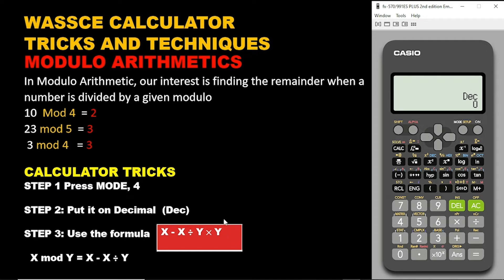To be able to use your calculator to solve modulo in just 2 seconds, we are going to use this expression: x minus x divided by y times y. So let's say we have x mod y. x will stand for the number you are going to divide, and then the y will stand for the modulo. So using this simple formula, it's going to be x minus x.